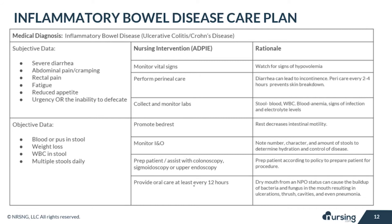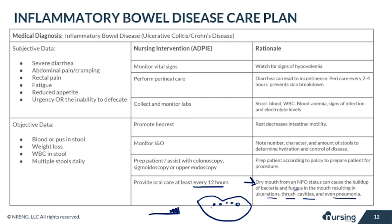Provide oral care at least every 12 hours while the patient is NPO, because dry mouth from NPO status can cause buildup of bacteria and fungus in the mouth, resulting in ulcerations, thrush, cavities, and even pneumonia. Assess the mouth and look for any dry, crusty chunks that could obstruct the airway. Swab the mouth every two to four hours as needed, and use a toothbrush without toothpaste to clean the teeth, gums, and tongue. Remove secretions and suction as needed to avoid aspiration.